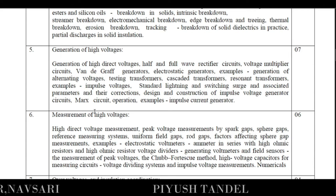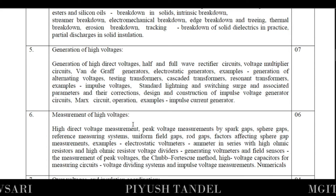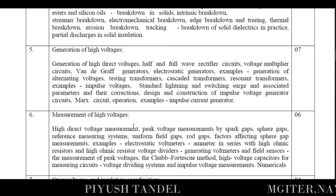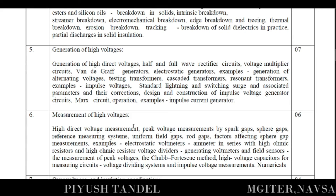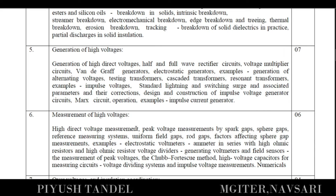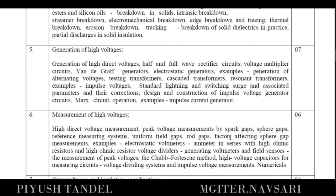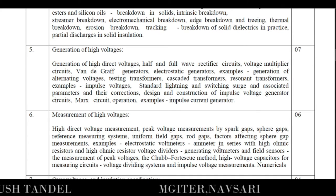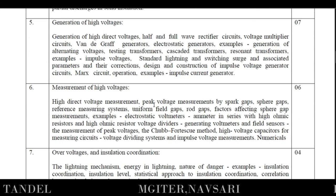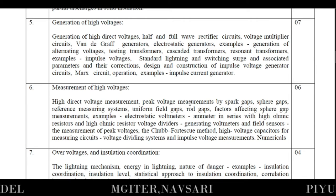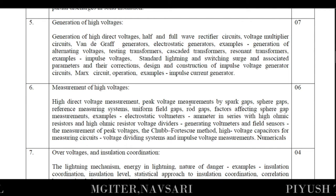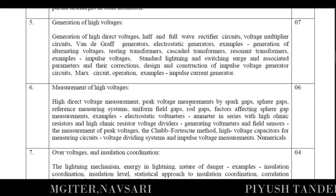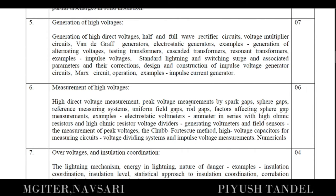Chapter six covers measurement of high voltage. Having generated high voltage in the previous chapter, we now measure it. Methods include direct measurement, peak voltage measurement, sphere gap reference measuring systems, rod gap, factors affecting sphere gap measurements, and electrostatic voltmeters. A meter in series with high ohmic resistance and other measuring devices are also covered. Since you have studied measurement subjects previously, this chapter should be easier to understand.